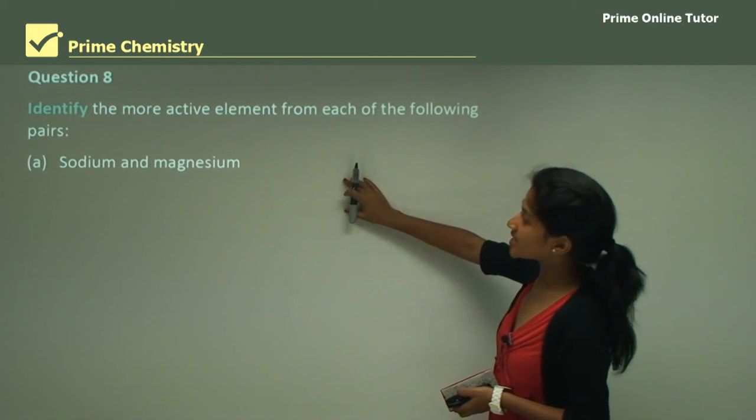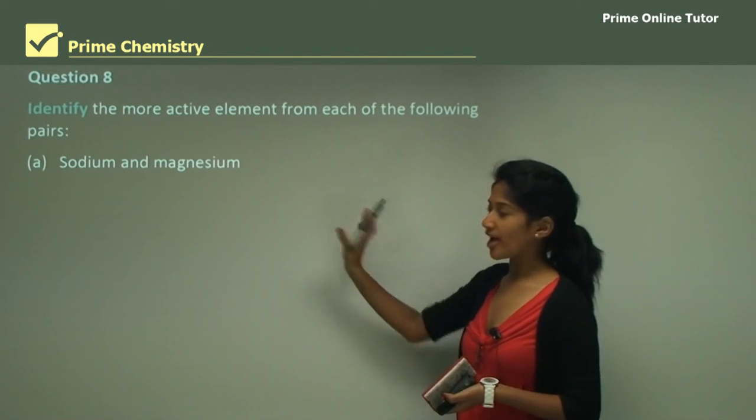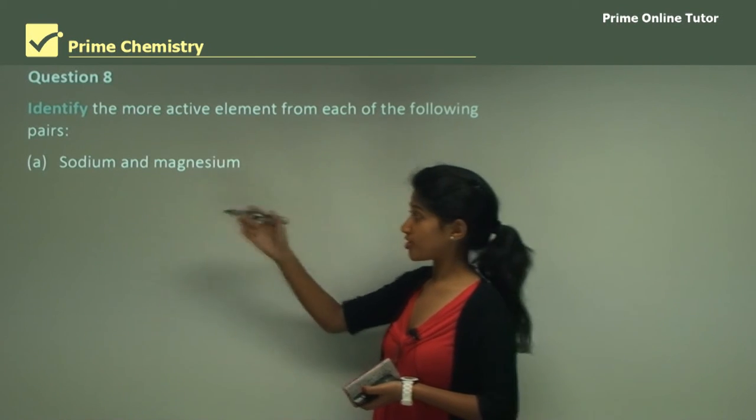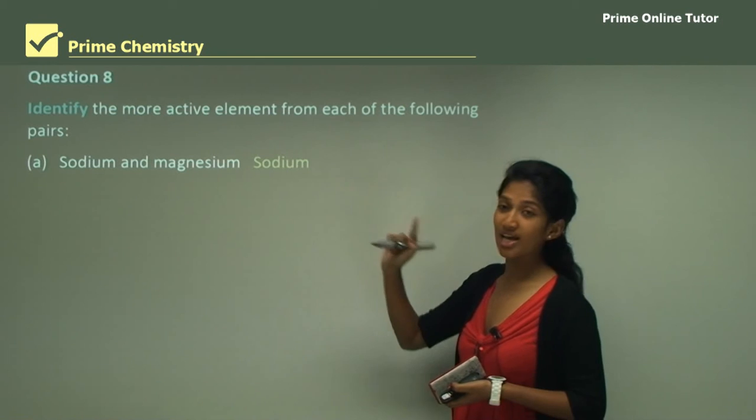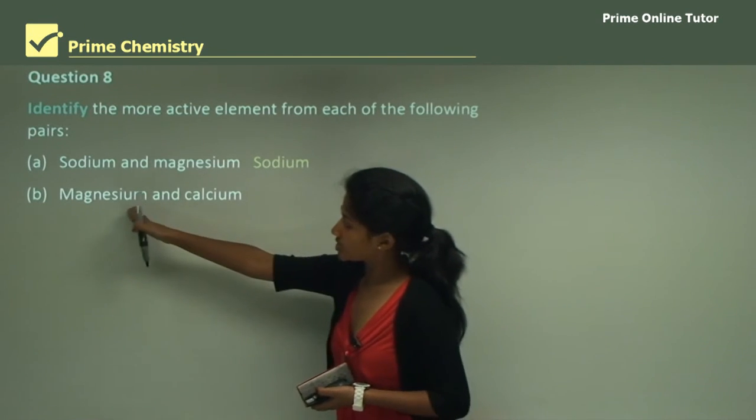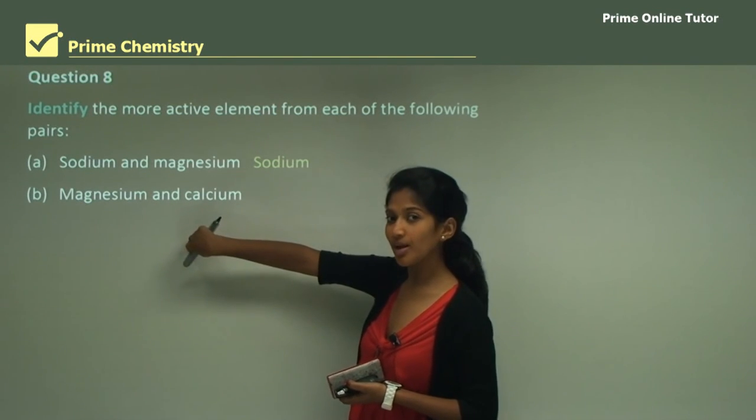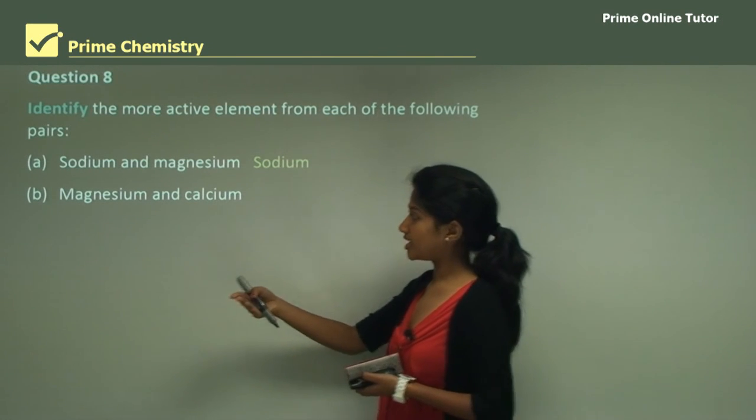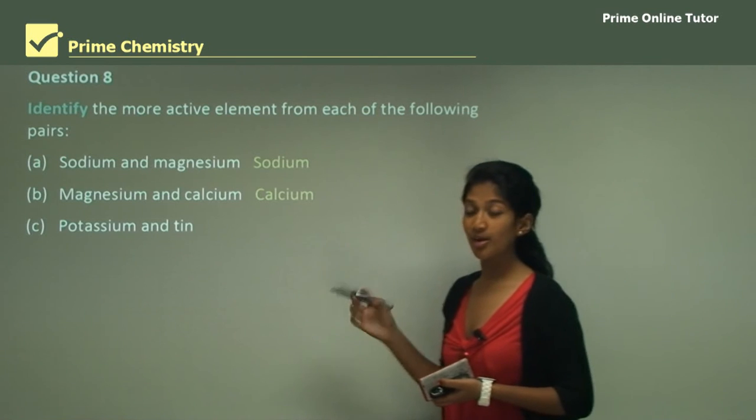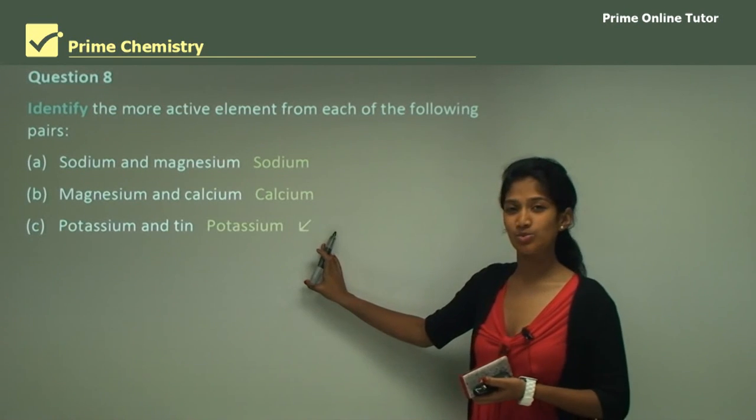Question 8 says to identify the more active metal from each of the following pairs. Note it says identify so you just have to name it. We have sodium and magnesium. Which of them are from the first group? Sodium is from the first group so sodium is your answer, because it only has one electron to lose while magnesium has two electrons to lose. Question B is magnesium and calcium. Which one of them is lower down the table? We know they are from the same group, but if you move lower then that's the more reactive. We know calcium is lower down the table so calcium is the answer. C is potassium and tin. Potassium is from group 1 and tin is a transition metal. Clearly potassium is more reactive so potassium would be your answer.